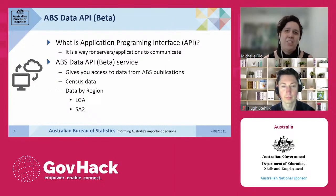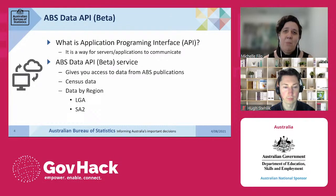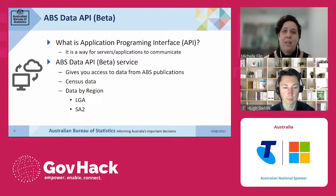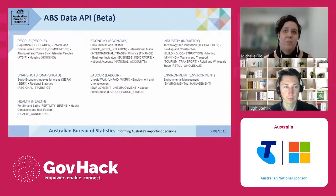What is Application Programming Interface? Without getting technical, the ABS Data API is a way for services to talk. It sends your request and brings back the answer for your request, like a middleman. The ABS Data API gives you access to data from several ABS publications, like the census data for 2011 and 2016, data by region with a range of data for various regions across Australia, including local government areas, statistical area level two, and other large geographies. We have data available on a range of themes including people, economy, industry, labour, environment, and health. We are also working on including data from the household impacts of COVID-19 survey.